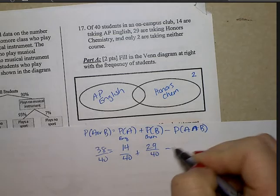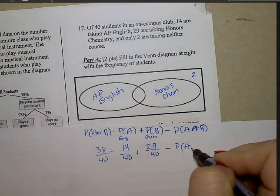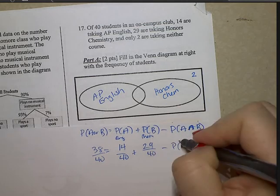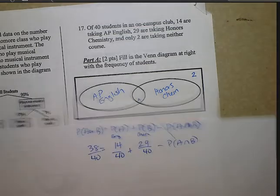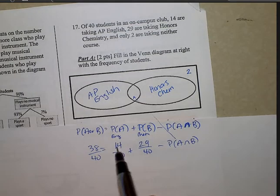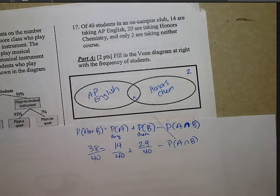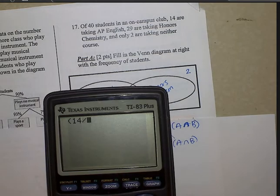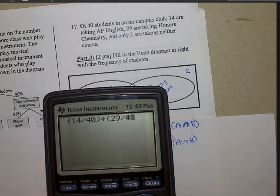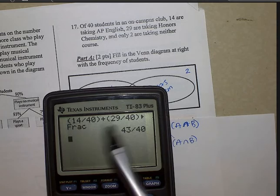And I want to find out what is the intersection. This is the intersection. What do they have in common? So 14 plus 29 over 40. Use your calculator. So on a calculator, it's going to look like this. So I get 43, because I'm adding these together, 43 over 40.